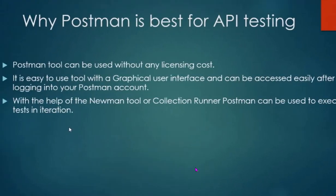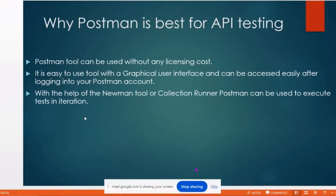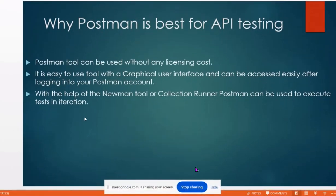For API testing, we are using Postman. Why is Postman best for API testing? The Postman tool can be used without any licensing cost. It is a very easy tool with a graphical user interface and can be accessed easily after logging into your Postman account. With the help of the Newman tool or Collection Runner, Postman can be used to execute testing iterations. Newman is a command-line tool used to run repetitive iterative requests.